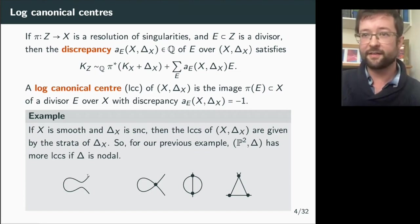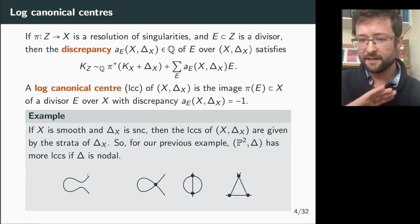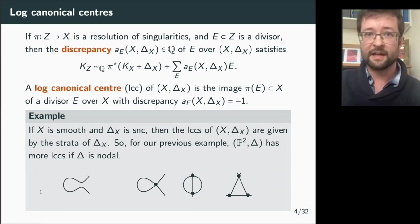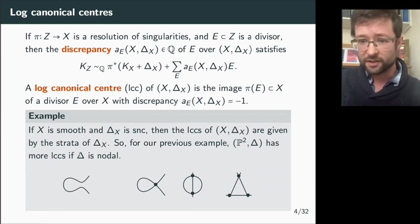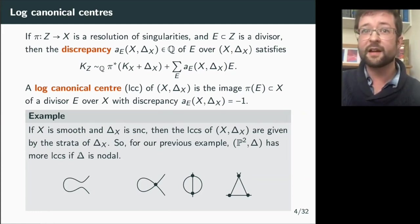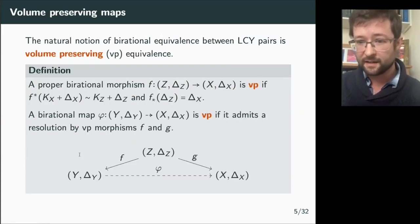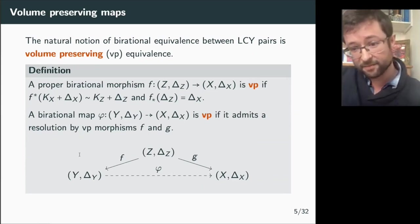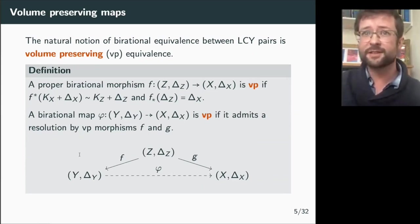In general, for a log-canonical pair, you can have much worse things than simple normal crossings. Essentially, the log canonical center is a generalization of what it means for the boundary divisor to have a stratum. Now that we've defined log-canonical pairs, it is useful to have a notion of birational equivalence to classify them, and the right notion here is called volume-preserving equivalence.